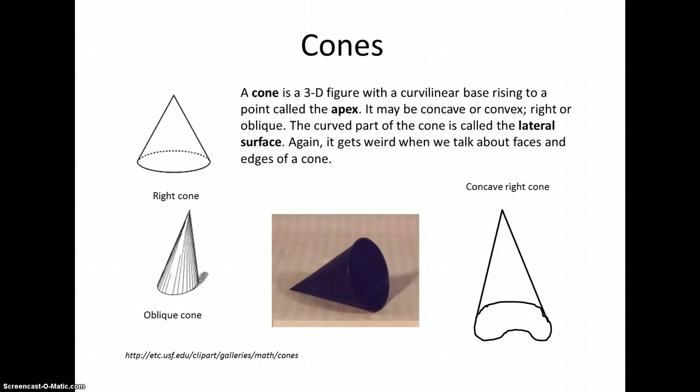Again, it gets really weird when we talk about faces, edges, or vertices of a cone because we've already defined them for polyhedron. That's why it's preferred to call them a base instead of a face, to call it the lateral surface instead of a face, and to call it the apex instead of a vertex. Then we know exactly what we're talking about, but you will see multiple use of these terms in books and online.